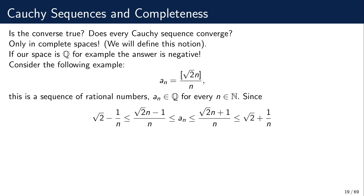If we consider this sequence as a Cauchy sequence in Q, it is indeed a Cauchy sequence because the sequence is real-convergent, and every convergent sequence is a Cauchy sequence. So a_n is a Cauchy sequence in Q, and it converges to a limit — but the limit is not in the space Q. In this sense, the rational numbers are not complete.